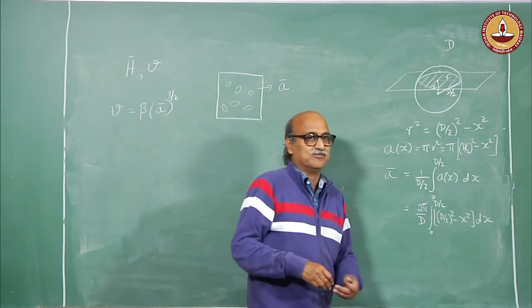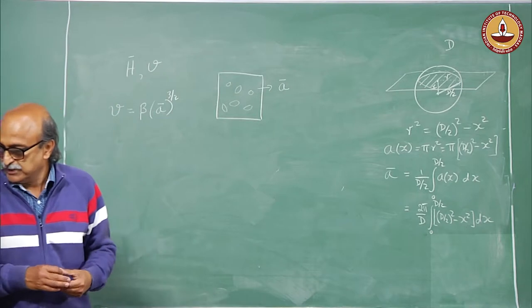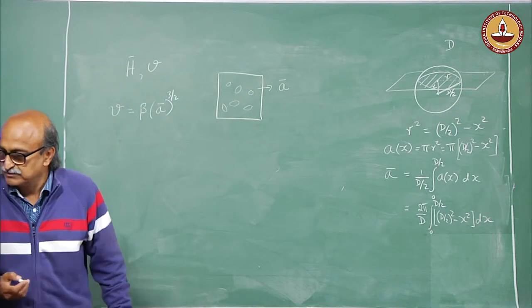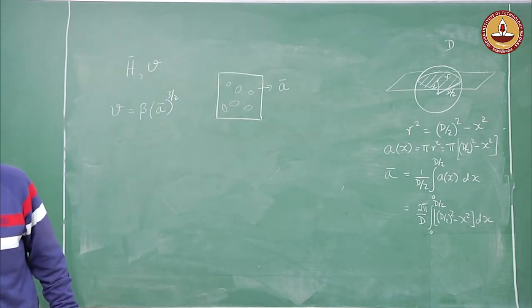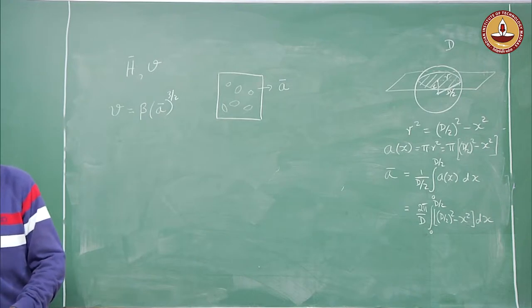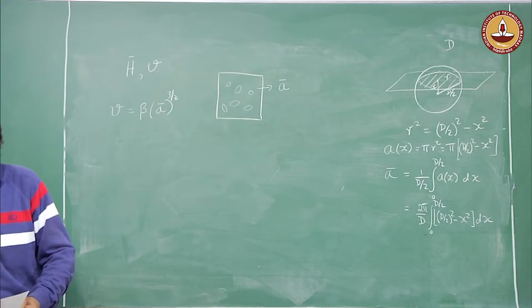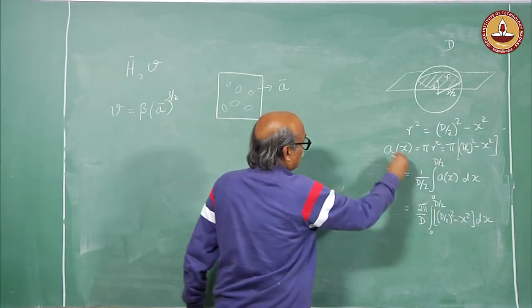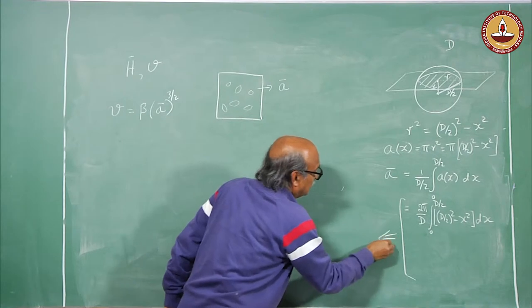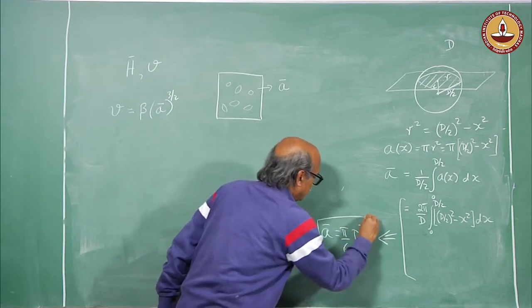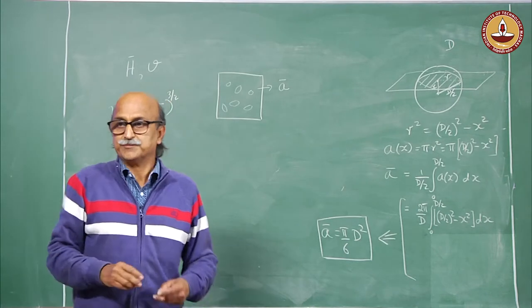Solving this integral is straightforward, and the final result is that the average section area equals pi/6 times D².